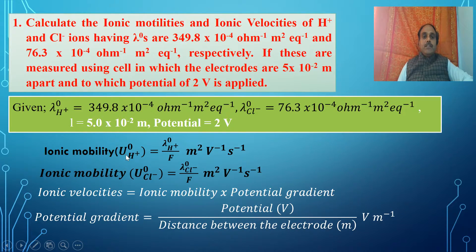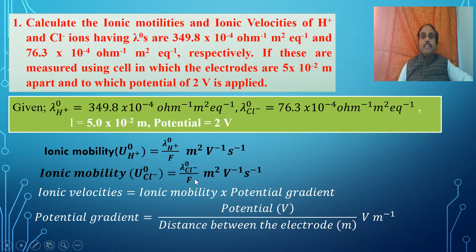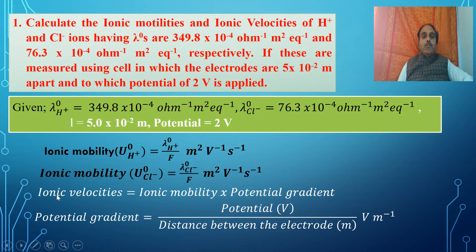Ionic mobility of H⁺ is λ°(H⁺) divided by F, and ionic mobility of Cl⁻ is λ°(Cl⁻) divided by 96500 coulombs per equivalent. The SI unit obtained for ionic mobility is meter² per volt per second. Ionic velocity is calculated by ionic mobility multiplied by the potential gradient.